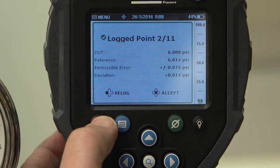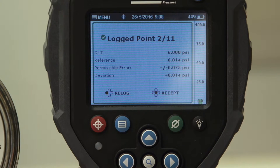Now we press log and you see a summary of the test point. Notice that both the reference and DUT readings are logged along with the computed deviation. We can also see that this point was outside the permissible error for this device.